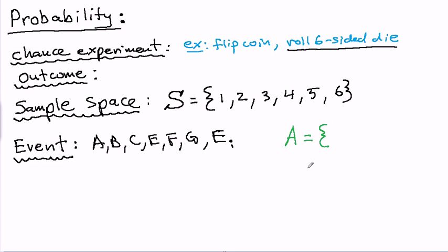So obviously, 1, the outcome of rolling 1, would satisfy event A, 3, and 5. So those 3 outcomes satisfy my definition of event A, which is rolling an odd number.